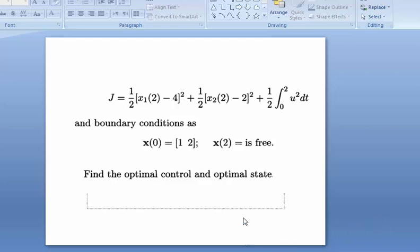Let me write this problem down. I forgot the model, the equation of the system. We have the model: ẋ1 = x2, and ẋ2 = u, the control input.